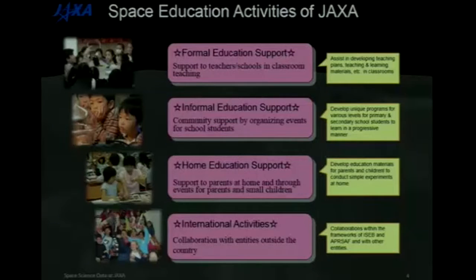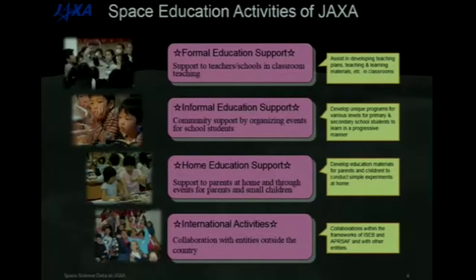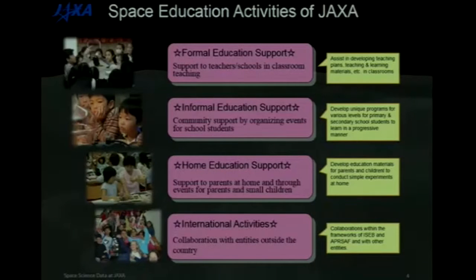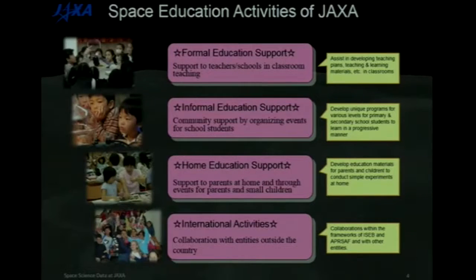To achieve our goals, we divide into four categories: formal education support, informal education support, home education support, and international activities. Formal education support is for teachers and school children in classroom teaching. Informal is outside the formal classroom. As an example, schools plan special events to invite JAXA staff to motivate children. JAXA also supports home education and international activities within the framework of the International Space Education Board.